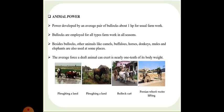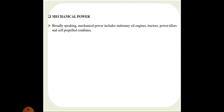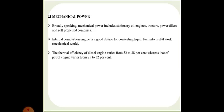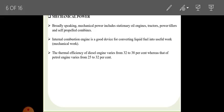Now we will be talking about mechanical power. Broadly speaking, mechanical power includes stationary oil engines, tractors, power tillers and self-propelled combines. Internal combustion engine, also called IC engine, is a good device for converting fuel, liquid fuel into useful work, that is mechanical work. The thermal efficiency of the diesel engine varies from 32 to 38 percent, whereas that of petrol engine varies from 25 to 32 percent.